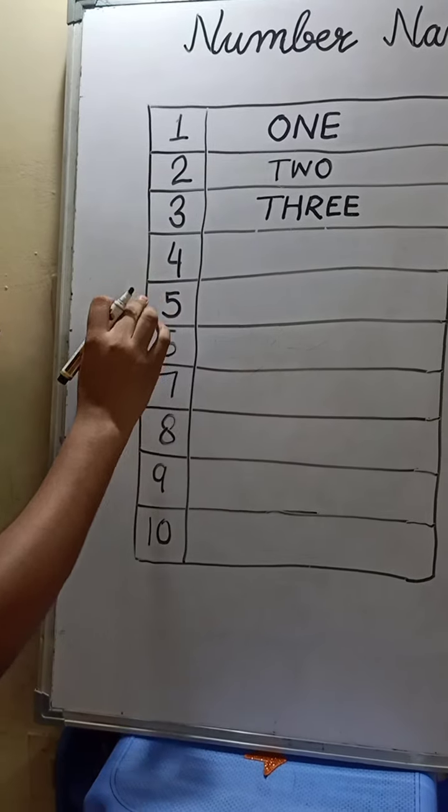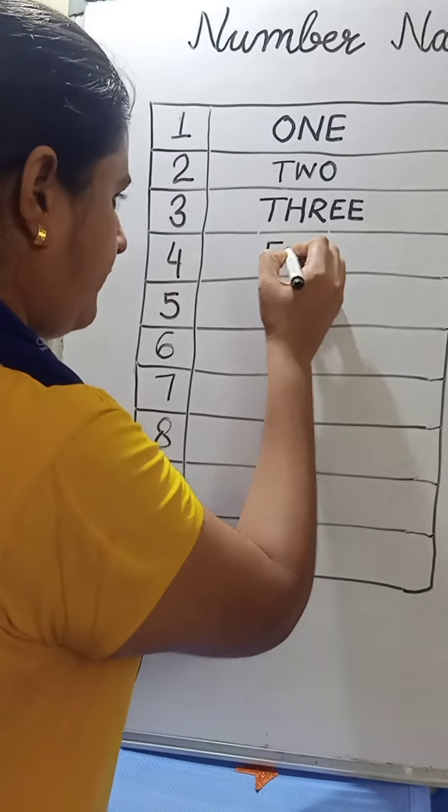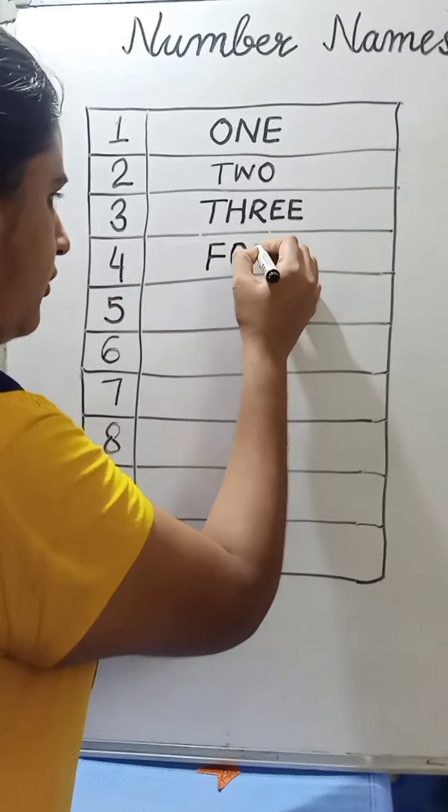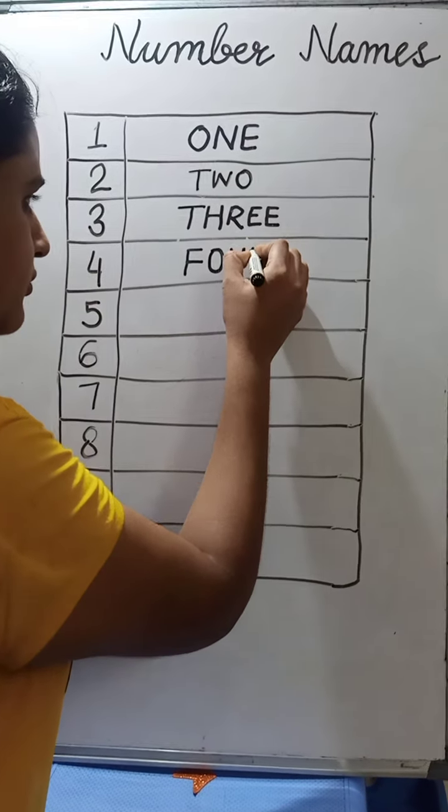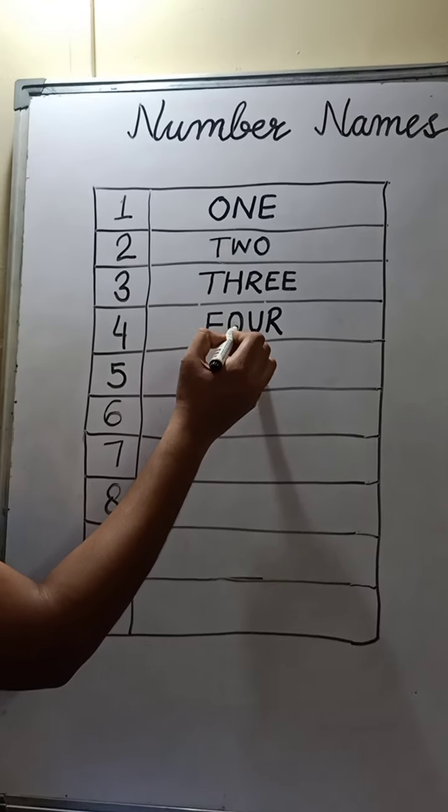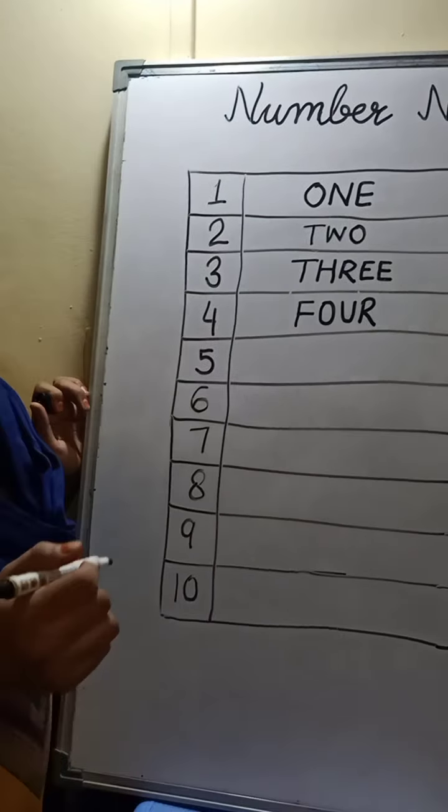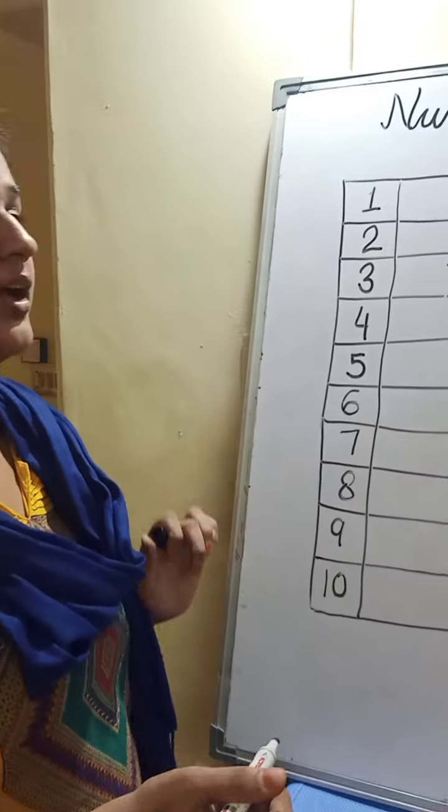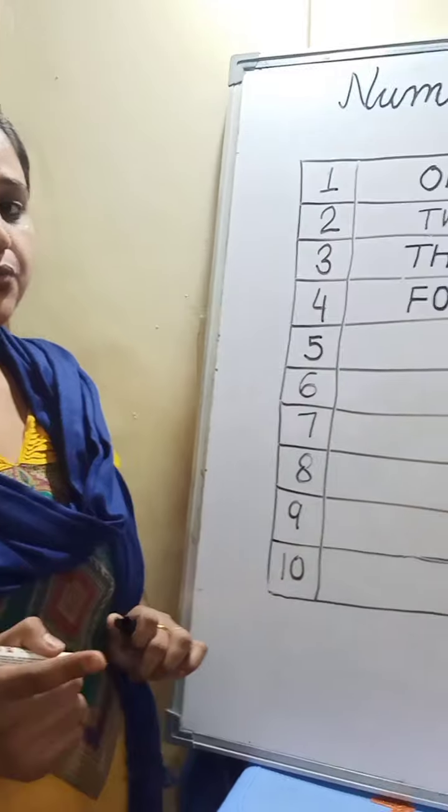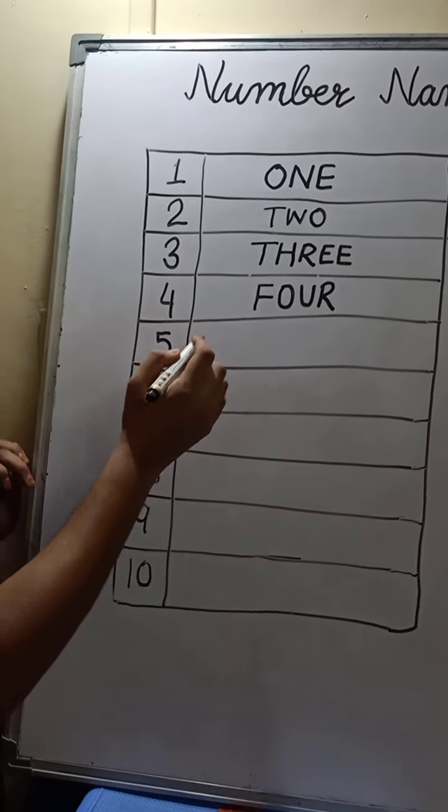Now next is number 4. F-O-U-R. Now let's speak with me again. F-O-U-R. Very good. Next number is 5.